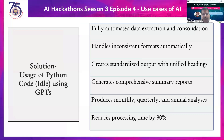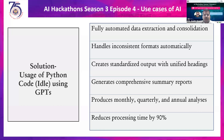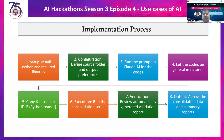For this problem statement, one of the good solutions is using Python code. Certain operations can also be done through macros, but Python has got more benefits compared to macros for payroll. We can do fully automated data extractions and consolidations, handle inconsistent formats automatically, obtain standardized outputs, generate conference summary reports, and produce employee-wise, month-wise, and quarter-wise reports to make the payroll consolidated.